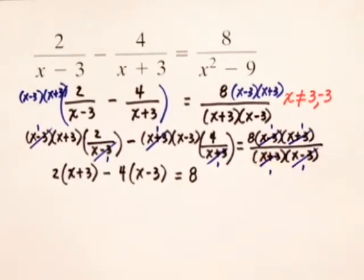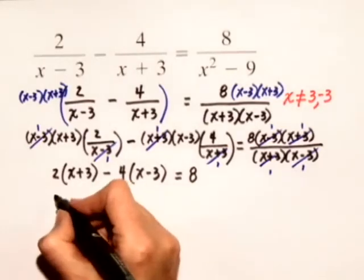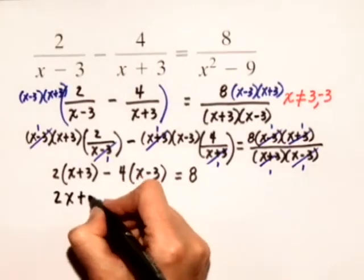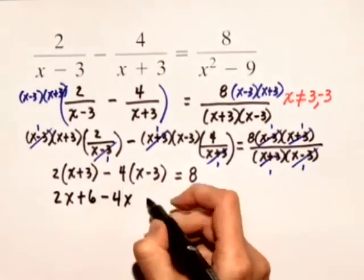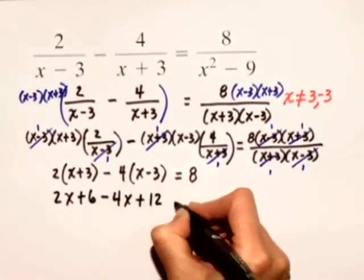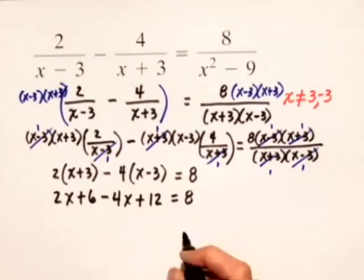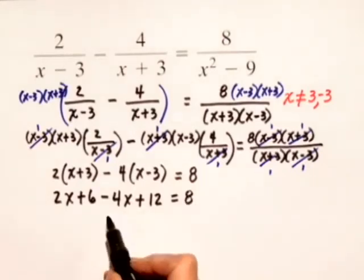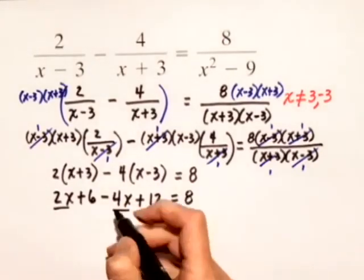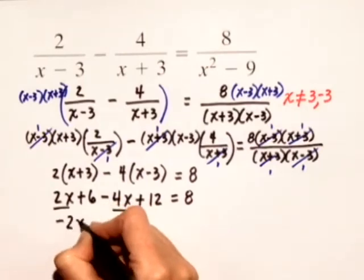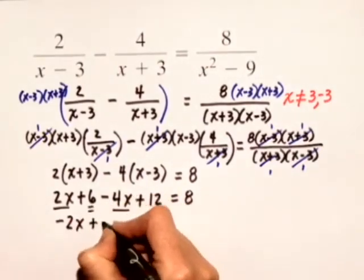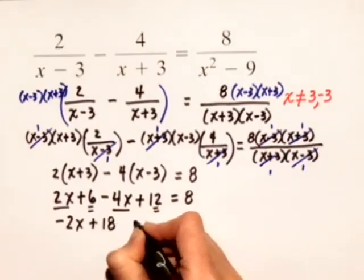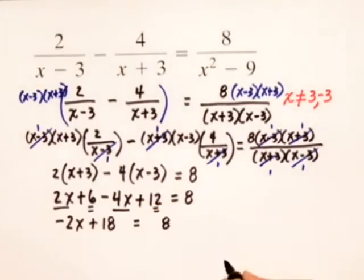Now we have a linear equation that we can solve. So next we'll distribute. We have 2x plus 6 minus 4x, and then negative 4 times negative 3 is plus 12 equals 8. Let's combine like terms on the left-hand side. 2x minus 4x gives us negative 2x, and 6 plus 12 gives us plus 18. That's equal to 8 on the right-hand side.